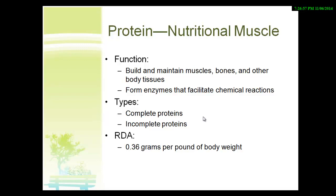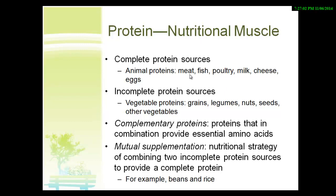Here are some sources of proteins. Complete protein sources include meat, fish, poultry, milk, cheese, and eggs. Incomplete proteins — the vegetable proteins — include grains, legumes, beans, nuts, seeds, and other vegetables. This is where we talk about complementary proteins, where you combine beans with nuts, beans with grains, or other seeds to get a complete protein and make sure you get all your essential amino acids.